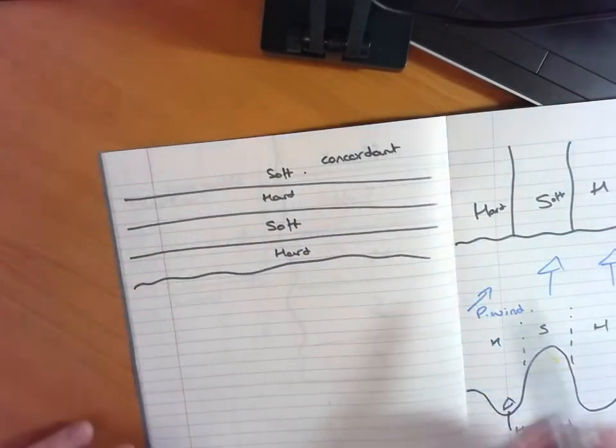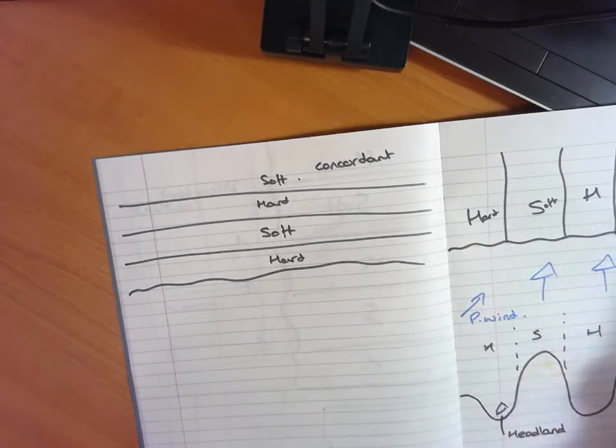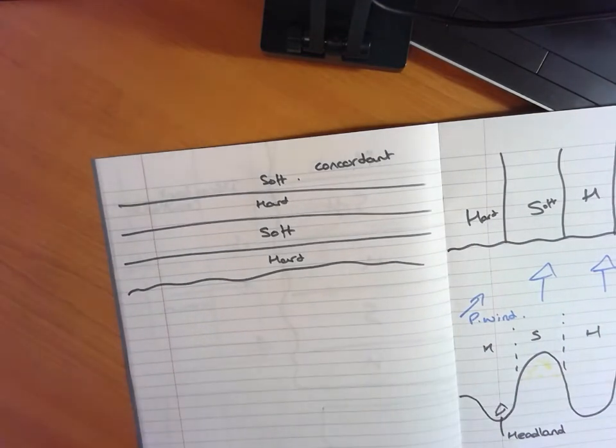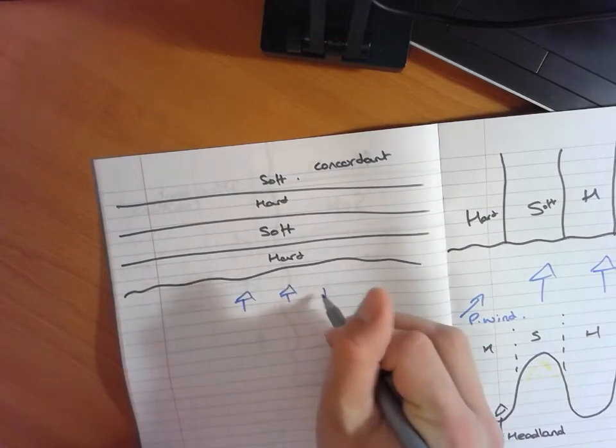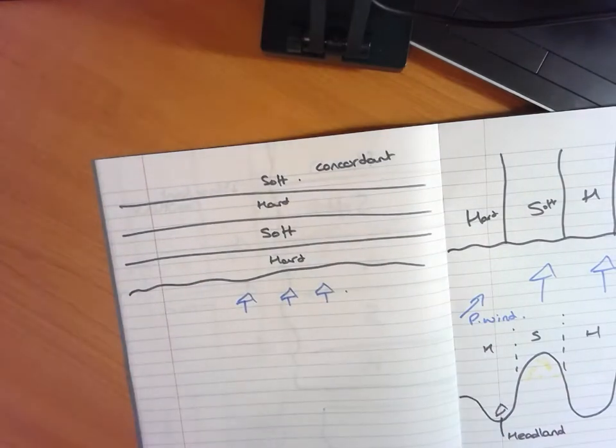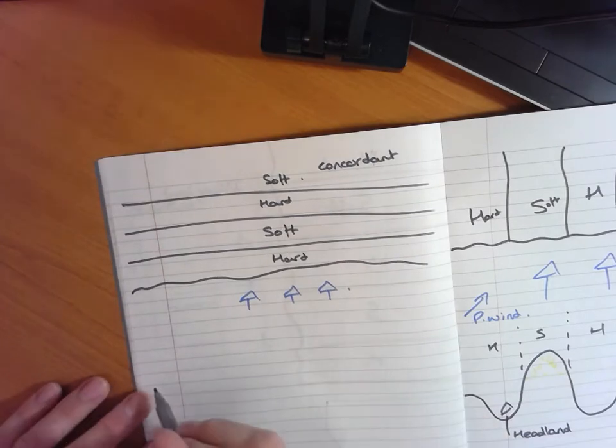Now this time because we don't have this alternation of hard and soft rock, over a significant period of time we don't get the same level of geographical coastal features that you would expect to find on a discordant coastline. You may end up simply with a coastline that does this.